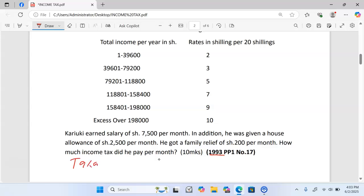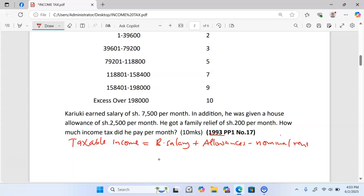In this case we need to start by looking at taxable income. Taxable income is given by the basic salary, you add all the taxable allowances, you minus the nominal rent. In this case the basic salary that we have been given is 7,500. We add a house allowance of 2,500. We do not have any other allowance. Nominal rent is usually for the people who are given free housing by the employer, and therefore we are going to have our taxable income as 10,000 shillings, that is per month.